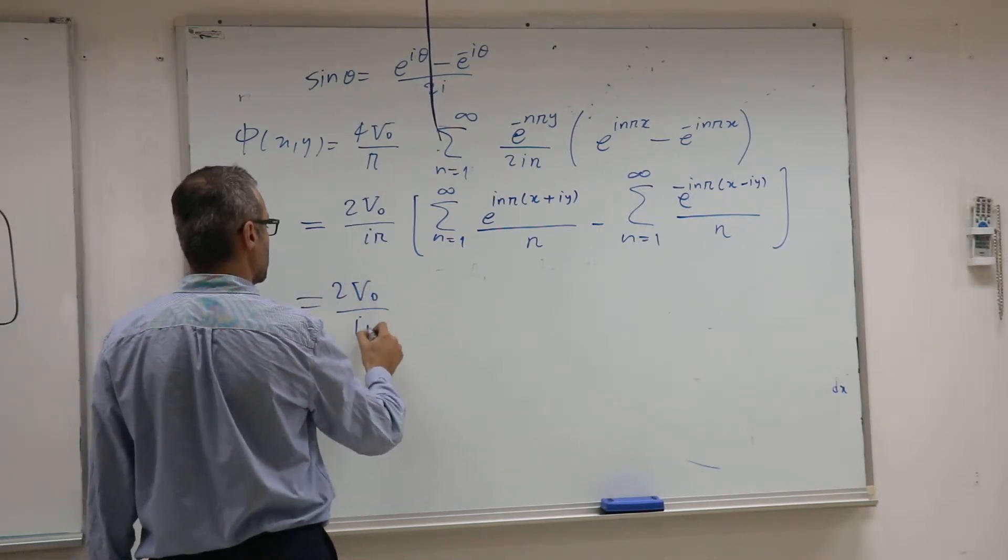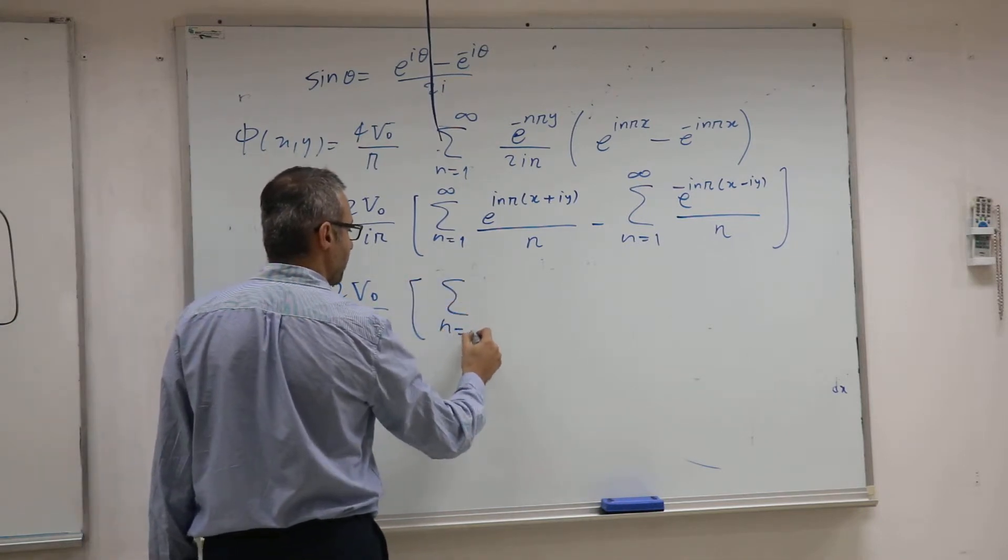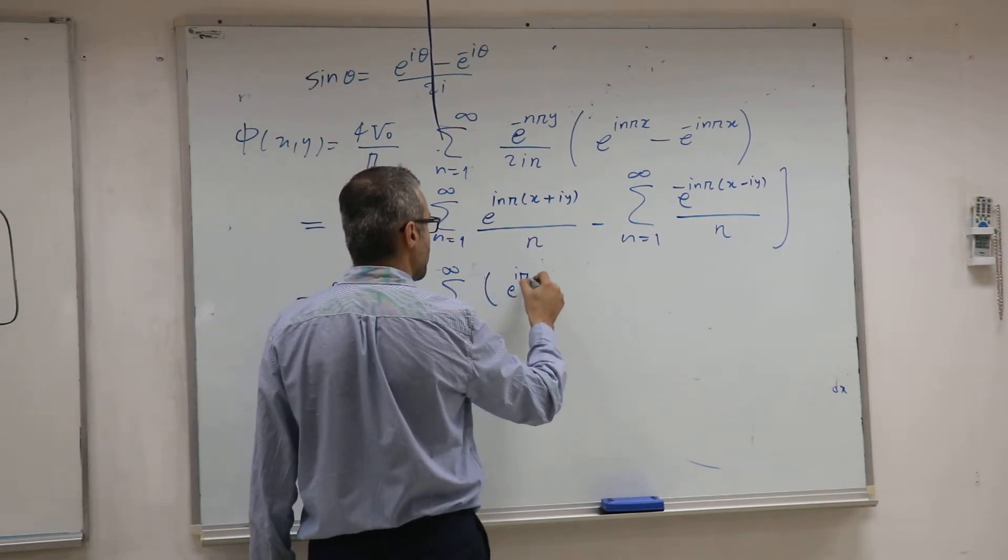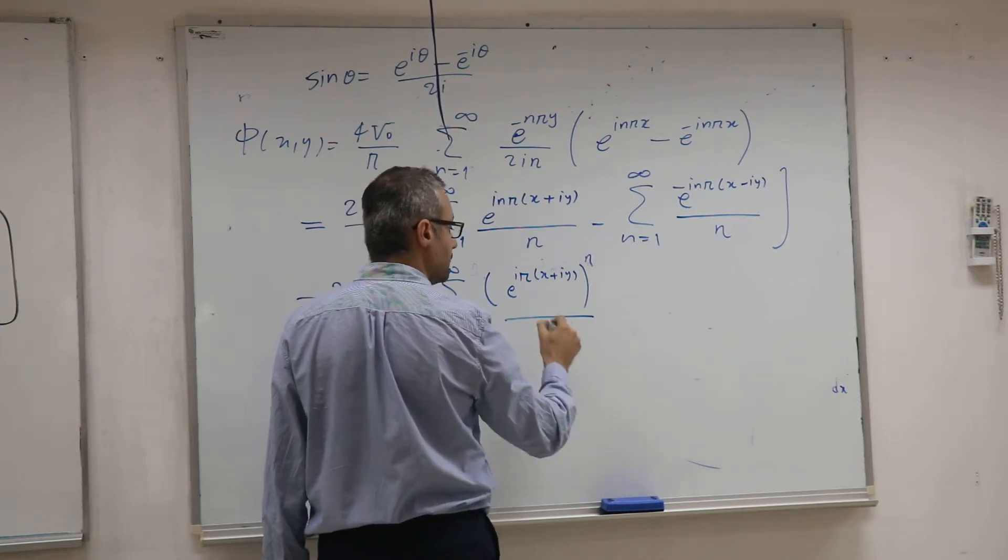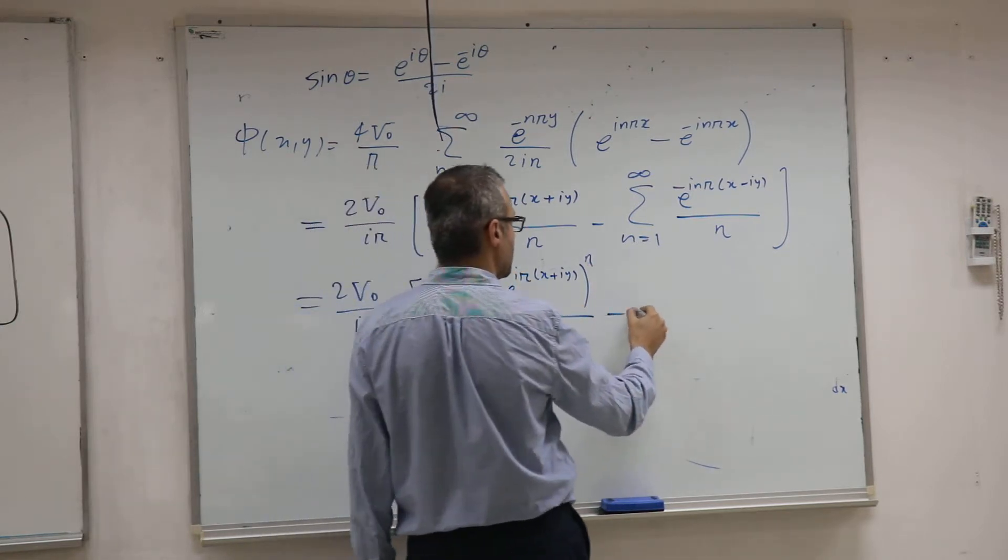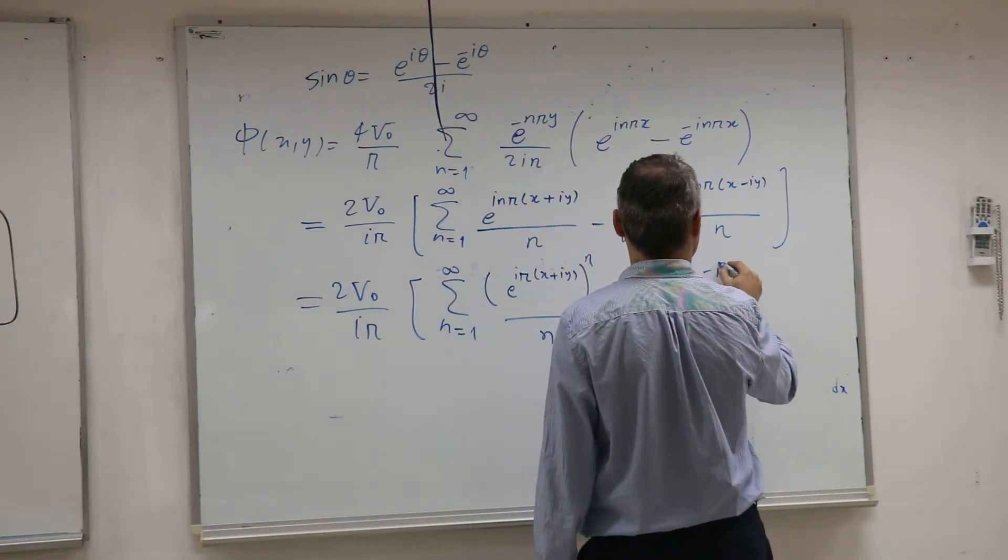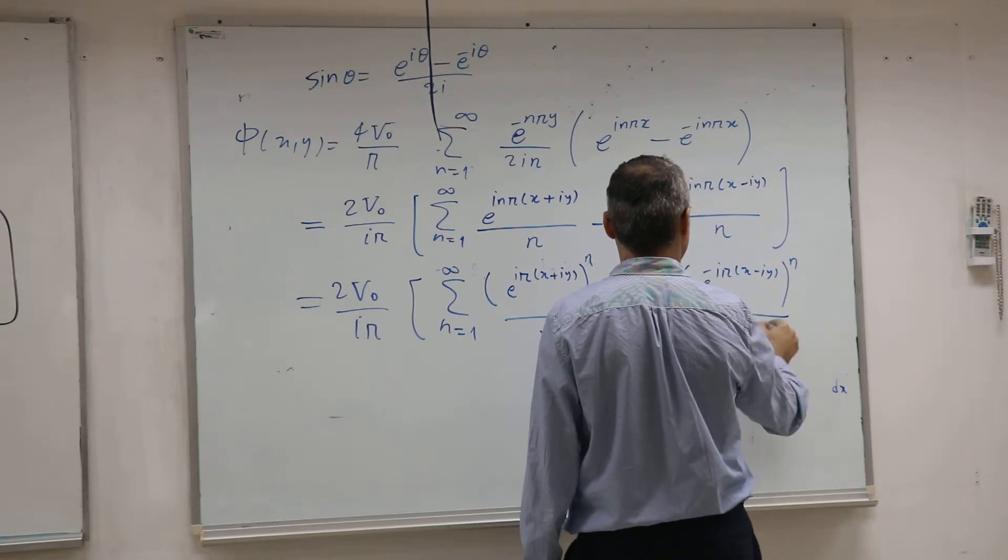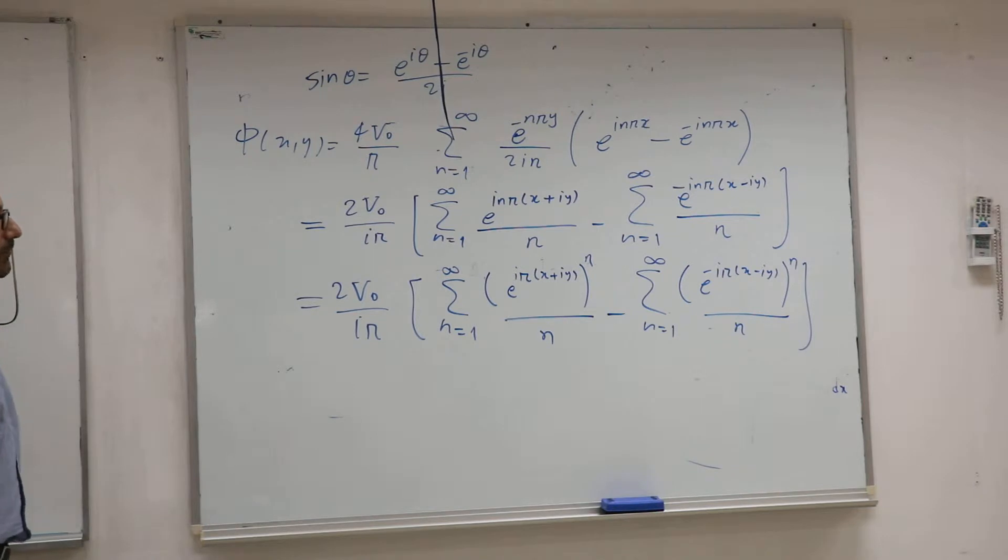I can continue. Can I write this like this or not? E^(iP(X+iY))^N over N minus sigma NP. Yeah? I can write this.